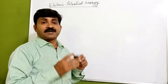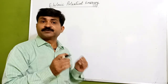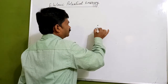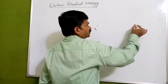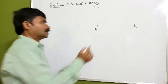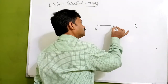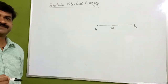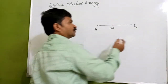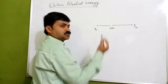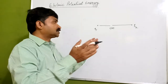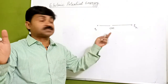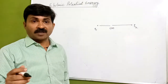Suppose we take a charge q1 and another charge q2. If we take the distance between them as infinite, the potential energy — or the work done — is zero, because these two charges are separated by a very large distance, that is, infinity.